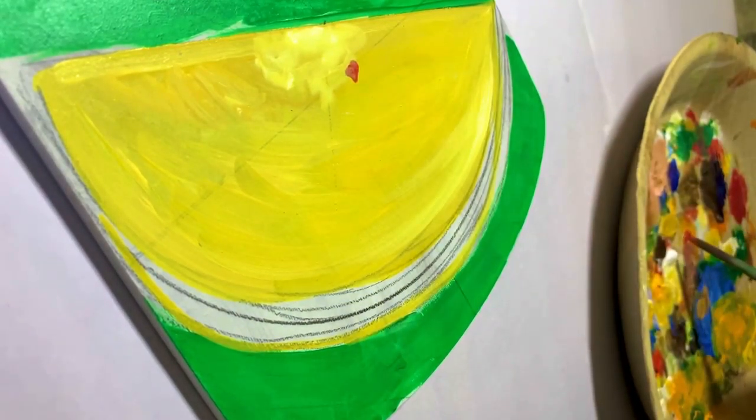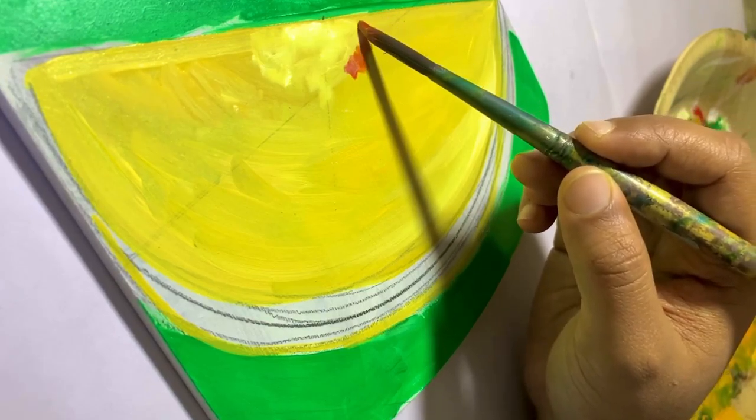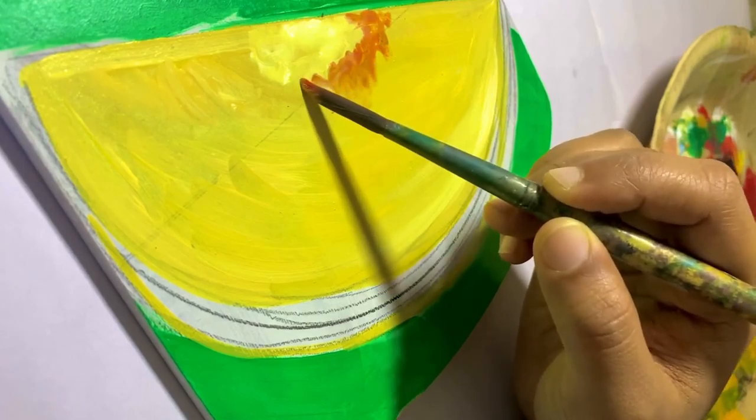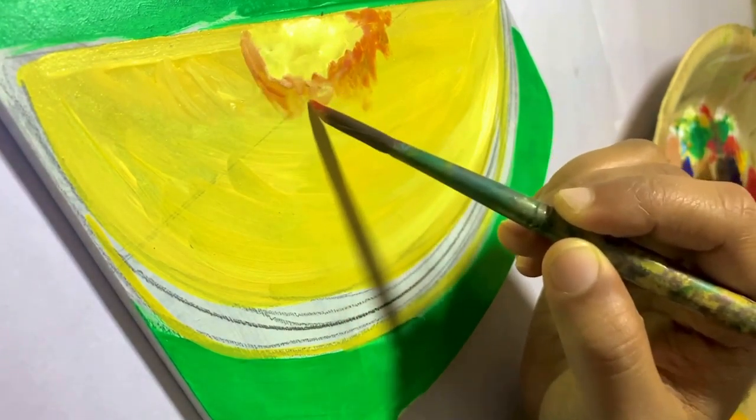I'm using acrylic colors in the shades lemon yellow and Indian red to add all the details of the roasted part of the dosa.